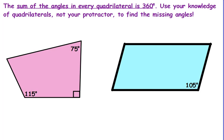Quadrilaterals, the sum of their angles will be 360 degrees in all quadrilaterals. You should use your knowledge of quadrilaterals, not your protractor, to find the missing angles. For example, this means that this is a right angle or 90 degrees. You have three of the four angles here.